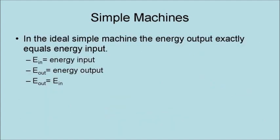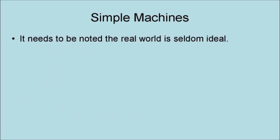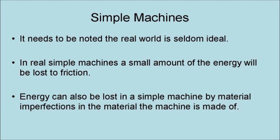In the ideal simple machine, the energy output exactly equals the energy input. This principle is based on the principle of conservation of energy, otherwise known as the first law of thermodynamics. It needs to be noted that the real world is seldom ideal. In real simple machines, a small amount of energy will be lost to friction. Energy can also be lost in a simple machine by material imperfections in the material the machine is made of.